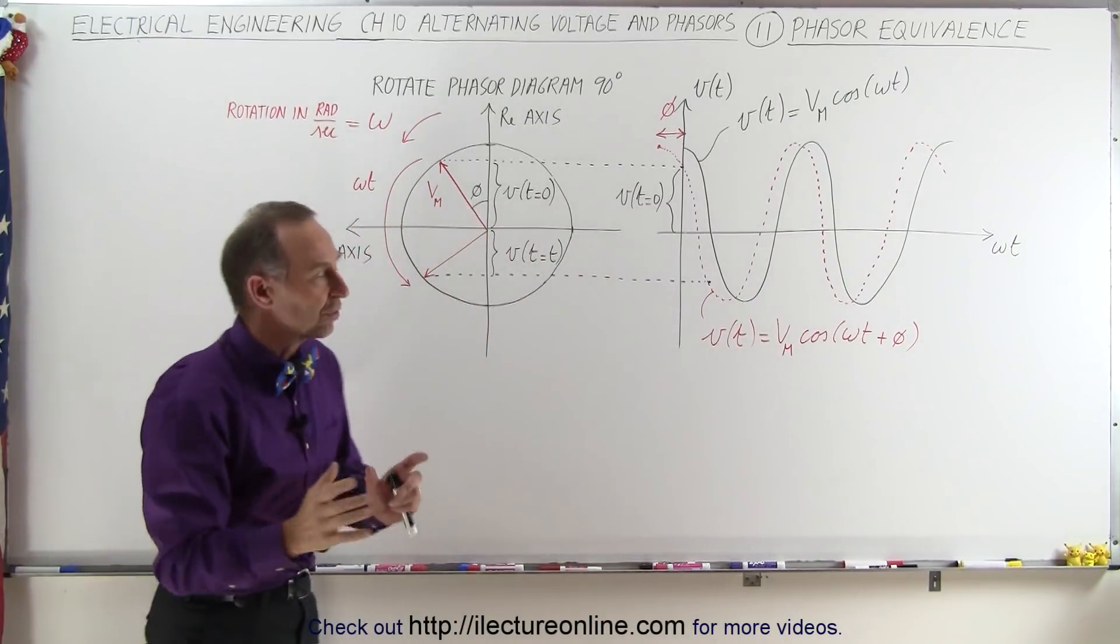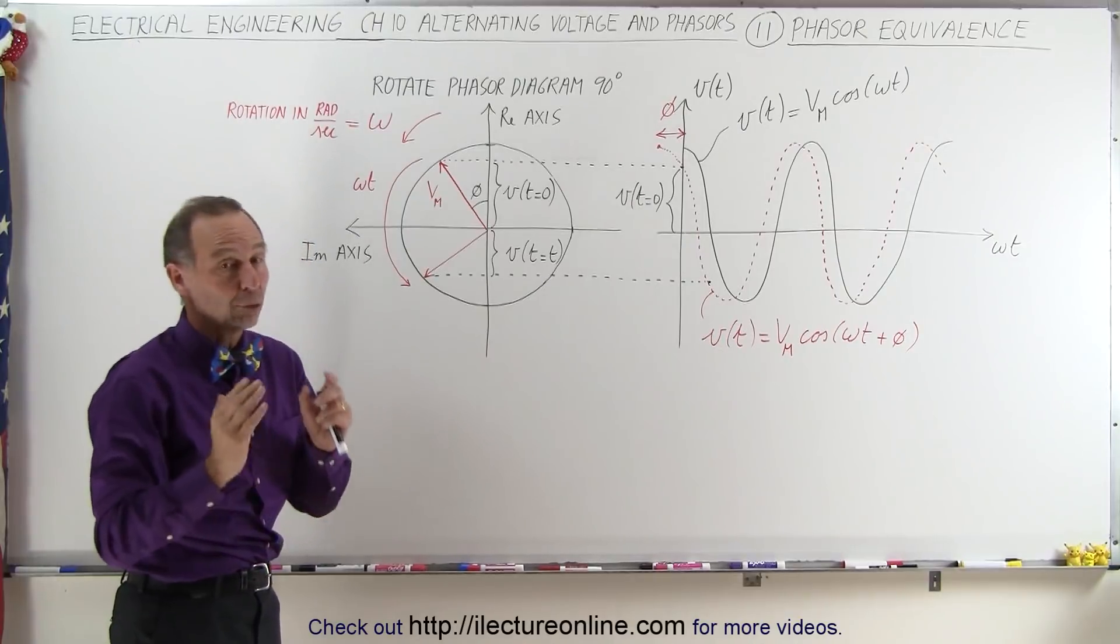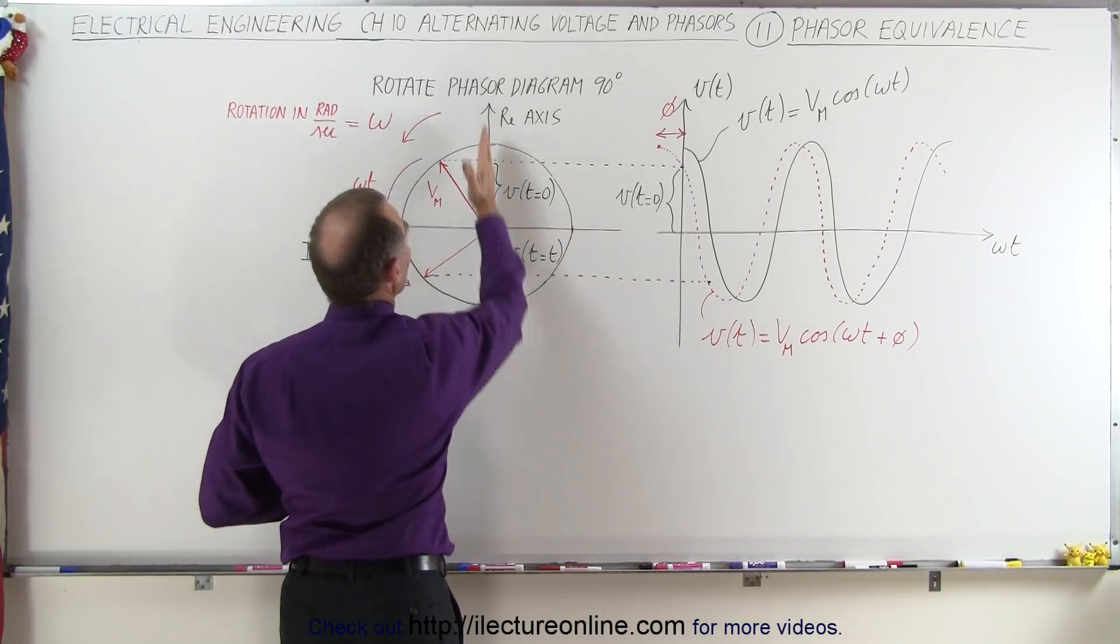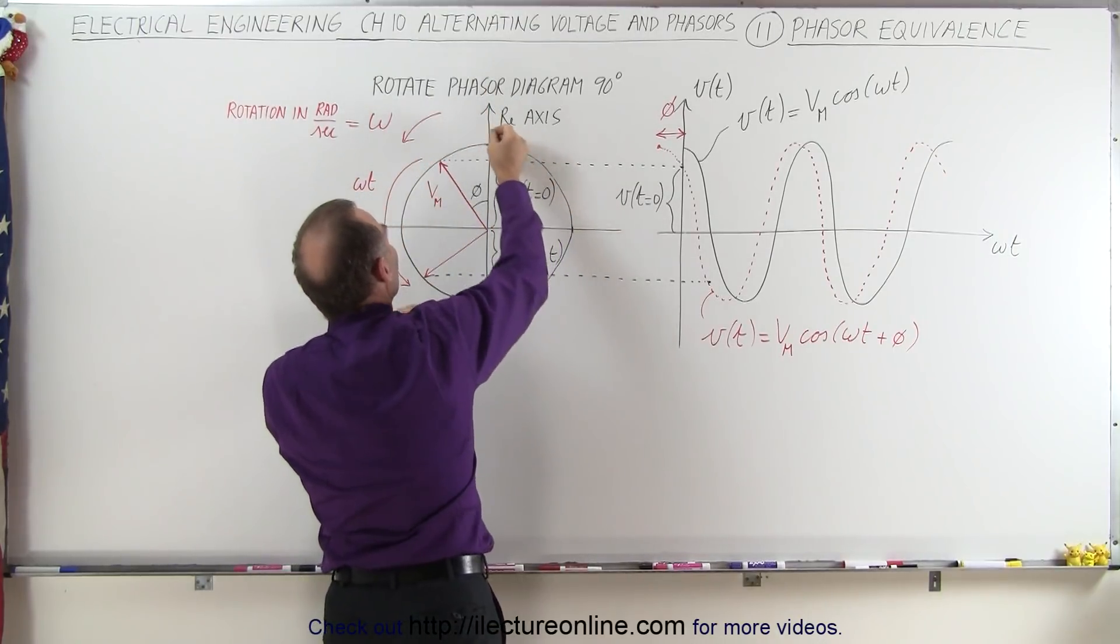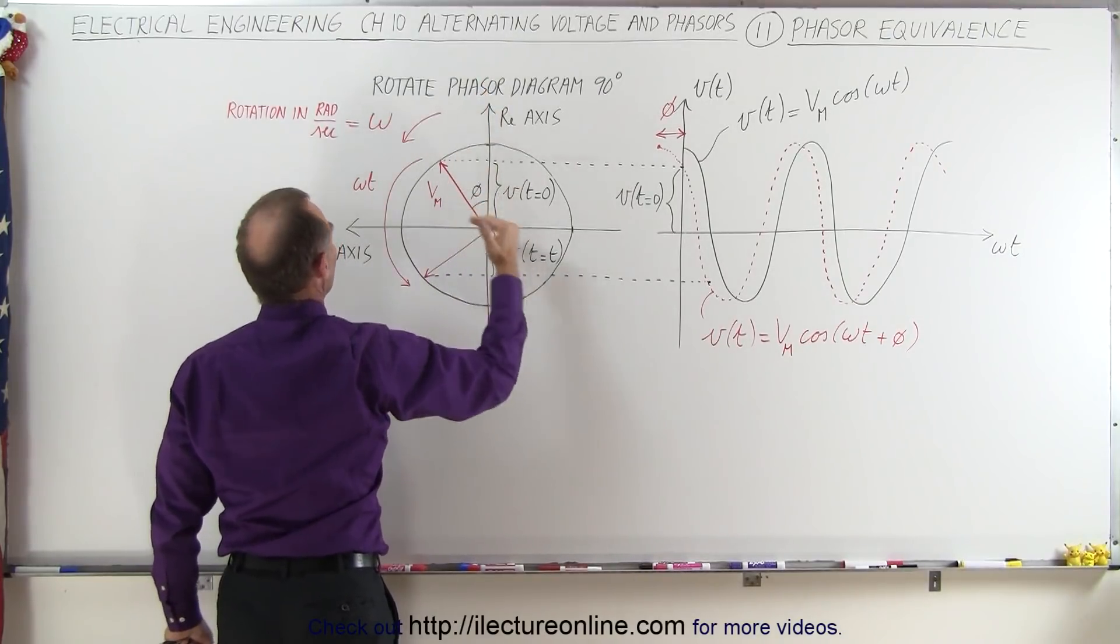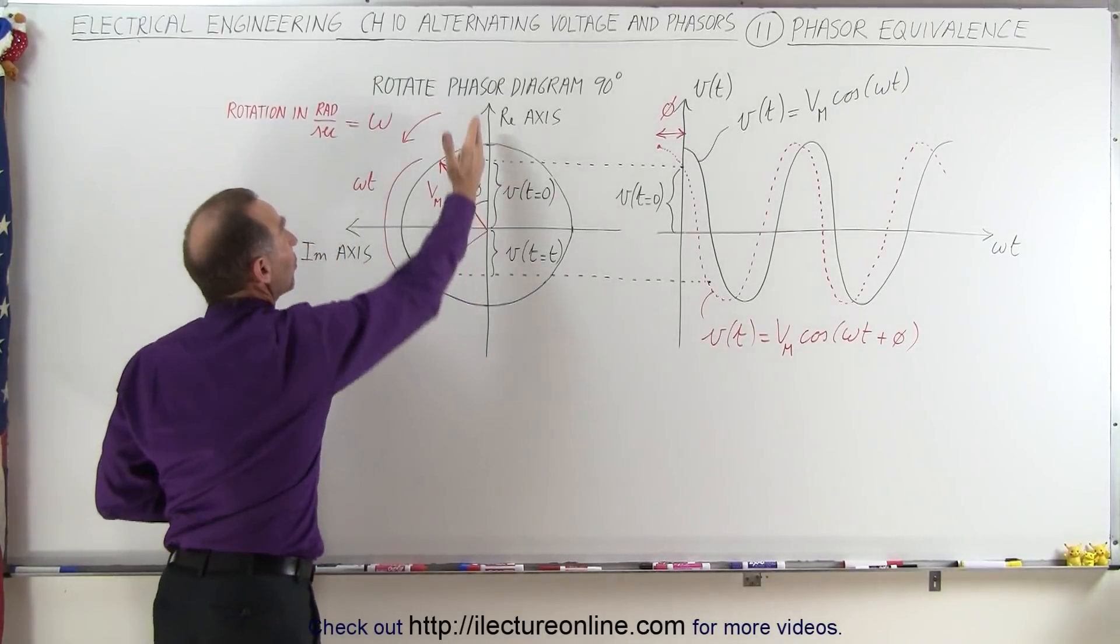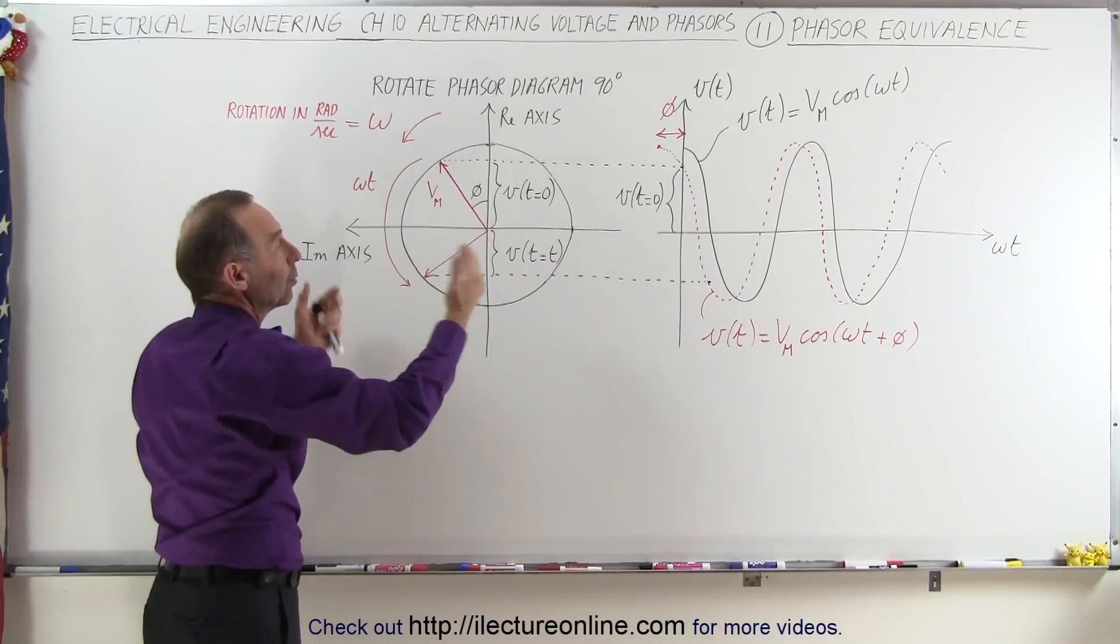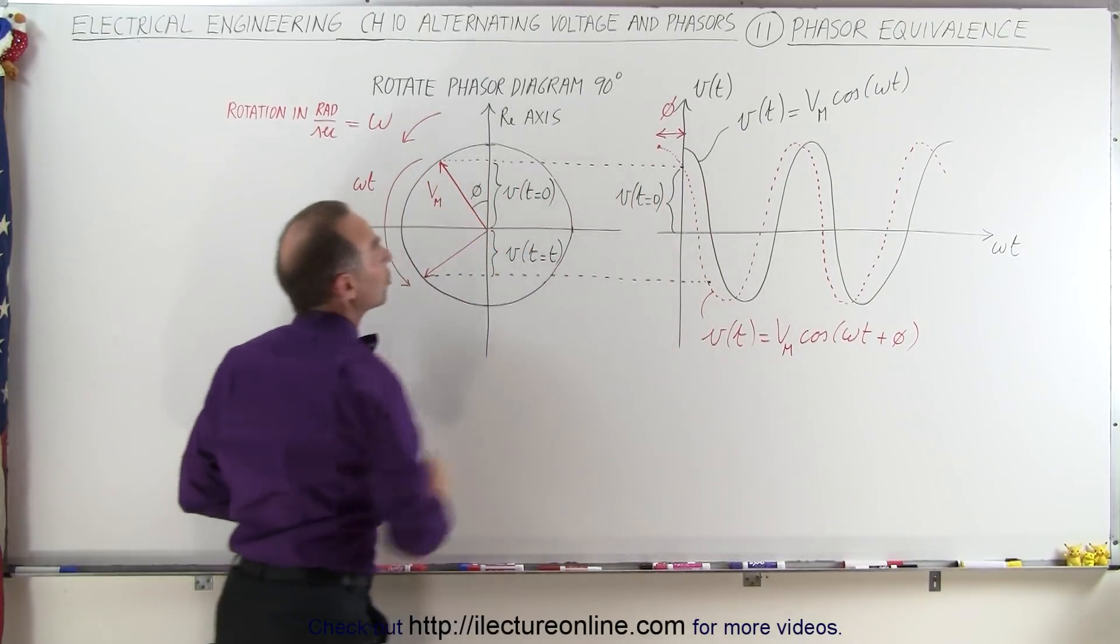So now we're going to transfer that onto a phasor diagram. In order to do that, normally we have the real axis as the horizontal axis and the imaginary axis as the vertical axis. We have rotated the phasor diagram by 90 degrees so we have the real axis in the vertical direction and the imaginary axis in the horizontal direction.